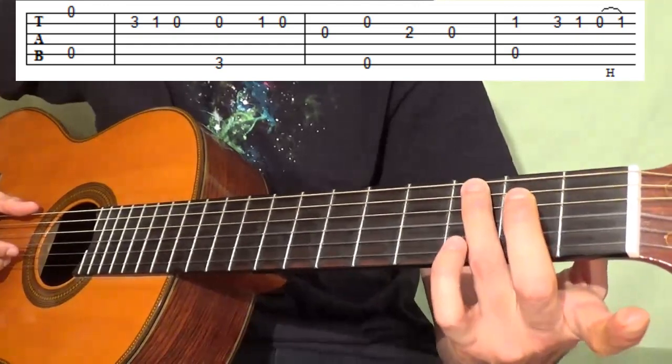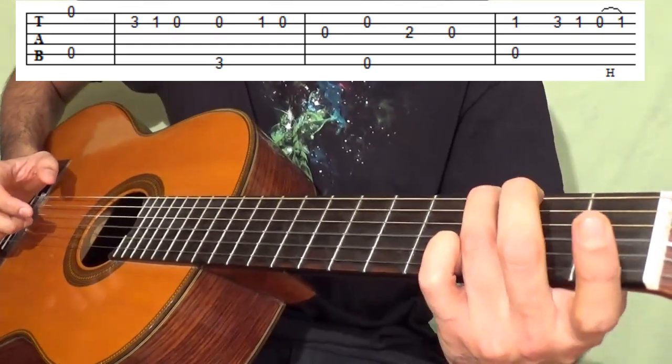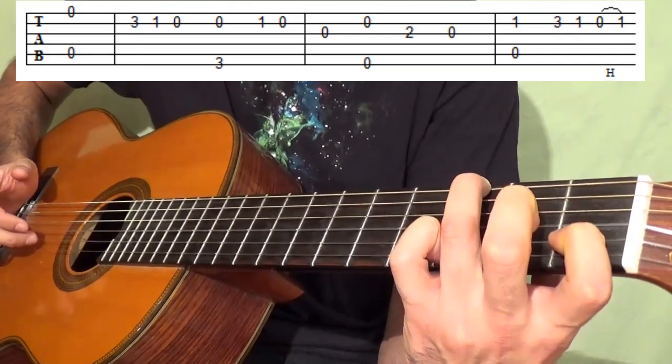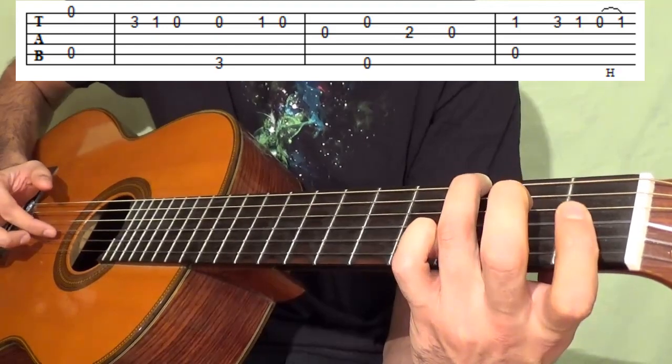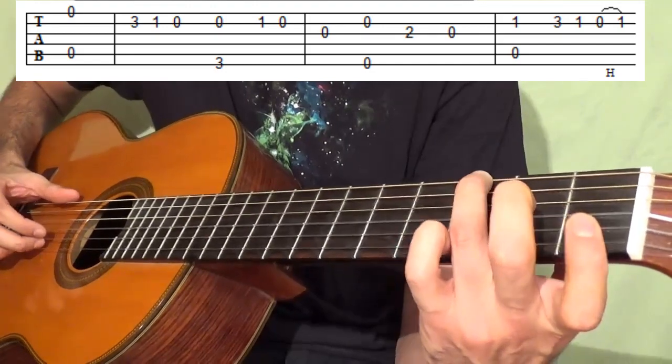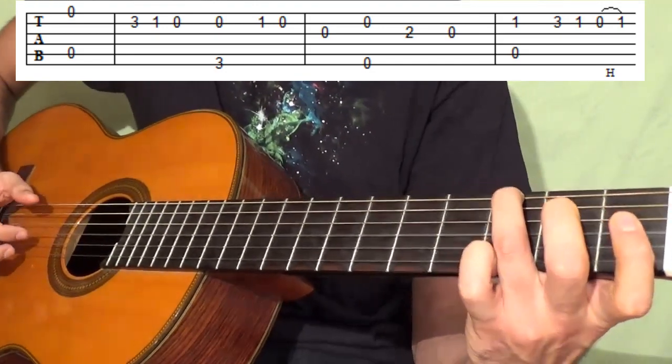Now we're going to go to the 3rd fret on the E string here and play that with an open B. And this index finger is going to play 1-0 on B. And then an open G. You can play all of that while you're still holding that 3rd fret on the E string there.